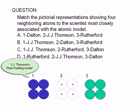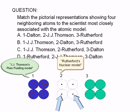Model 2 resembles the nuclear model of the atom, where the mass of the atom is concentrated in a positively charged nucleus, and the electrons are moving about in what is mostly empty space around the atom.